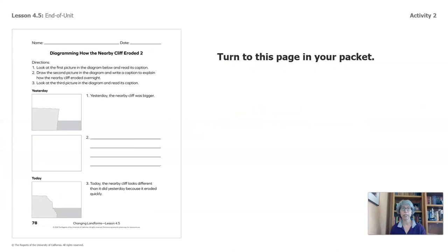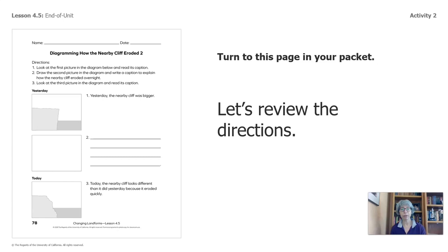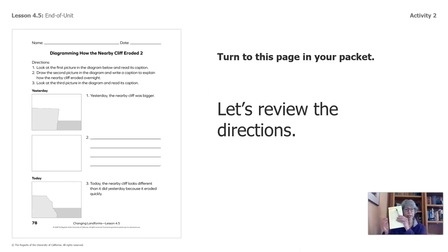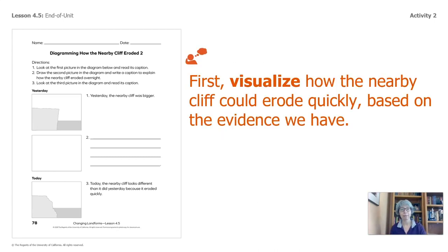I'd like you to turn to this page in your packet — diagramming how the nearby cliff eroded. Let's review the directions. Remember, if you do not have the packet, any piece of paper that you have in your household and a pencil will do just fine. First, let's visualize how the nearby cliff could erode quickly, based on the evidence we have.